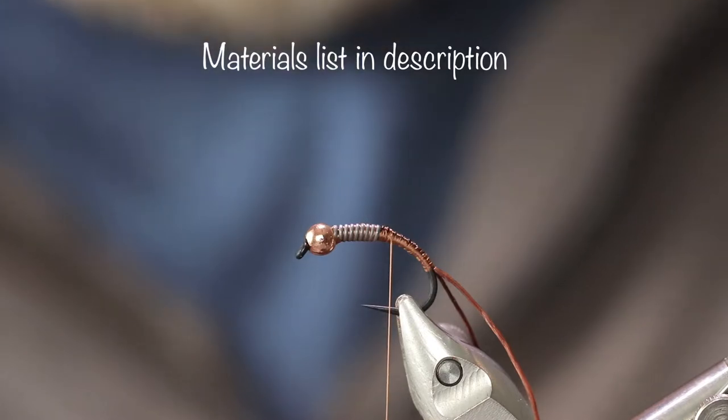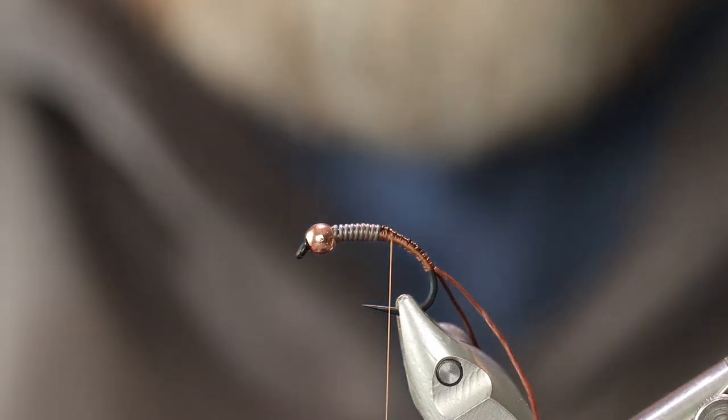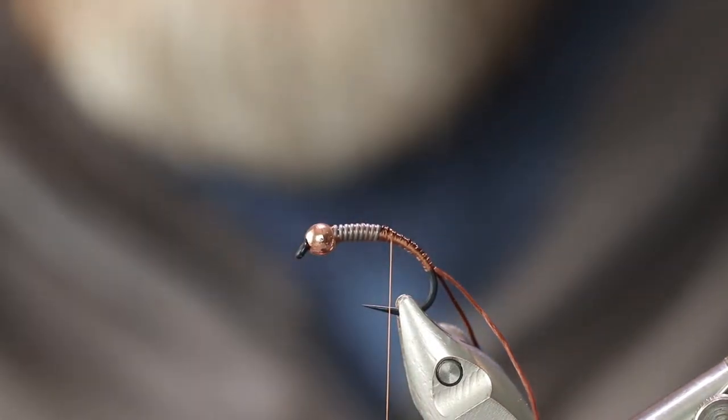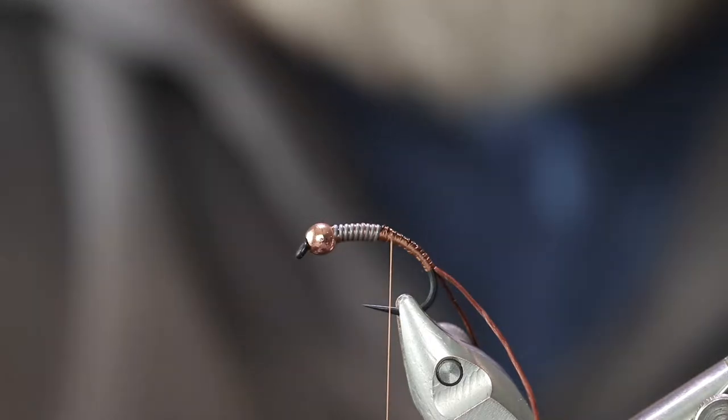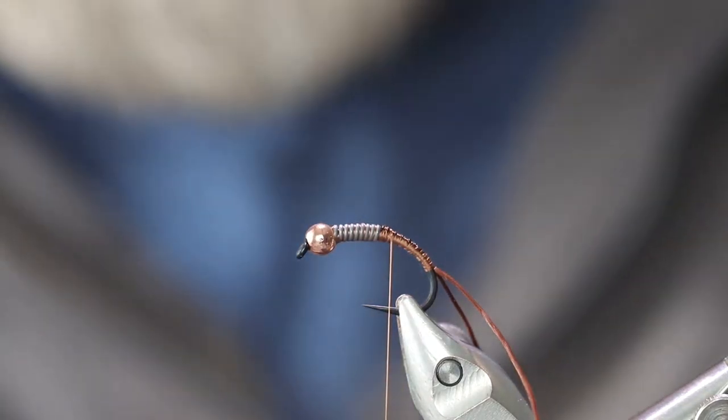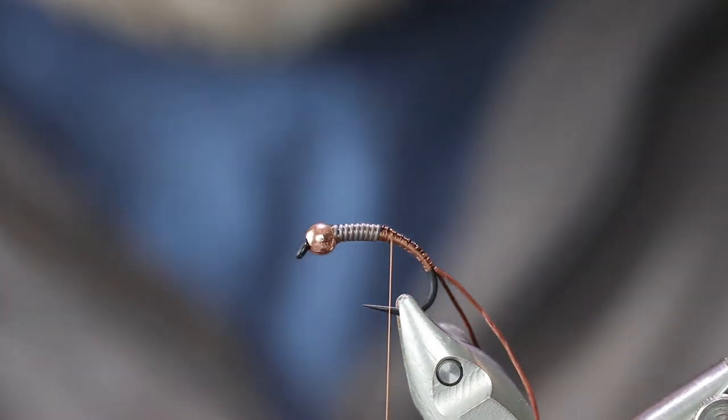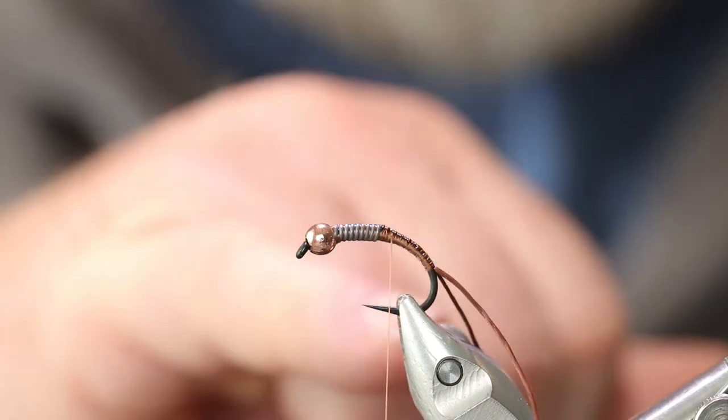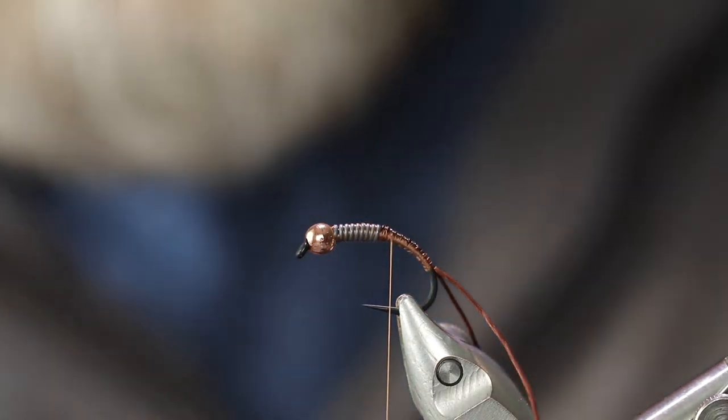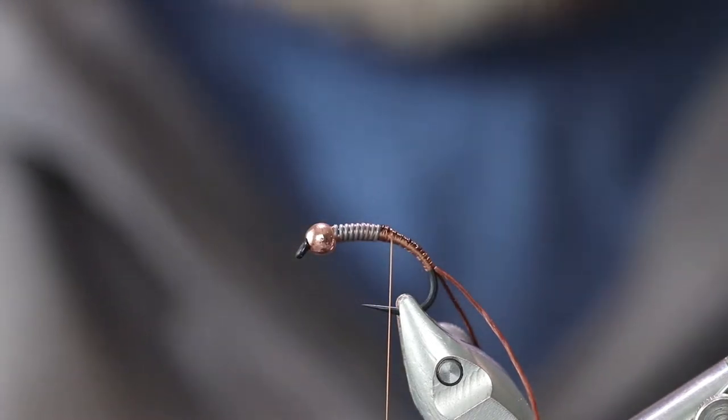I'm working on a wire-bodied brownstone fly nymph here and I'd like to share it with you guys. I'm using for a hook a 1929 Select Series Daiichi in a size 6. The bead I have on is a 3.8 millimeter tungsten bead in copper and I got eight wraps of 25 thousandths lead wire behind the bead to add a little extra weight. I've gone ahead and already tied in the tail and the tail material is larva lace super floss in brown.